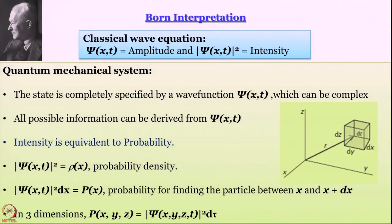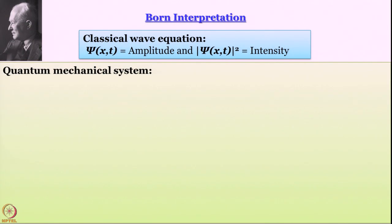Born interpretation essentially says this. In classical wave equation — remember Schrodinger equation started off as a classical wave equation for de Broglie waves — the mod square of psi denotes intensity of the wave. Psi can be imaginary also, so if you multiply psi by its complex conjugate, you get mod psi square, which is the intensity.